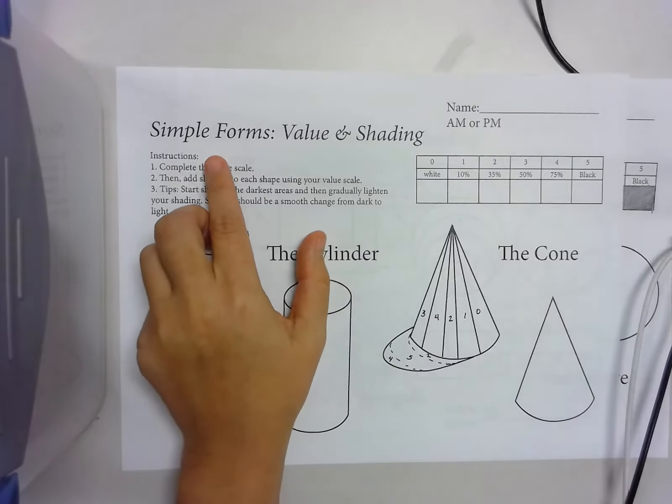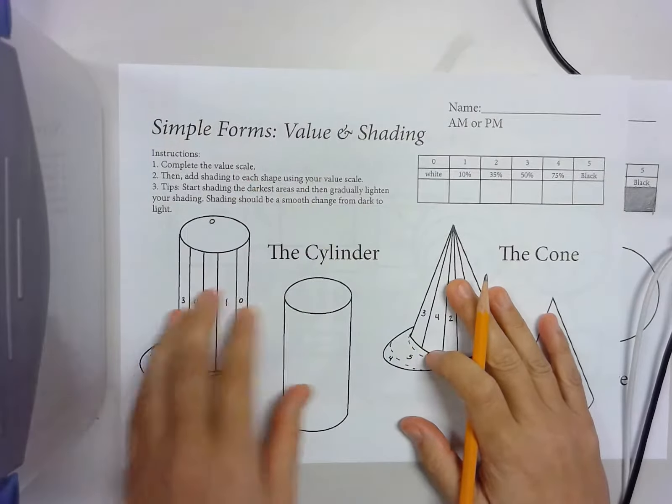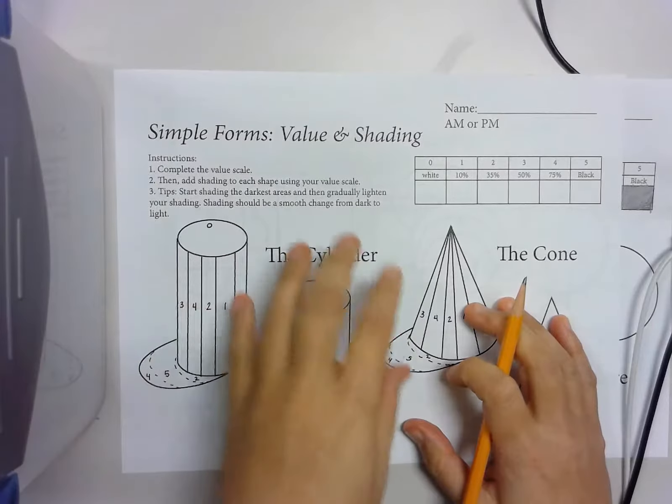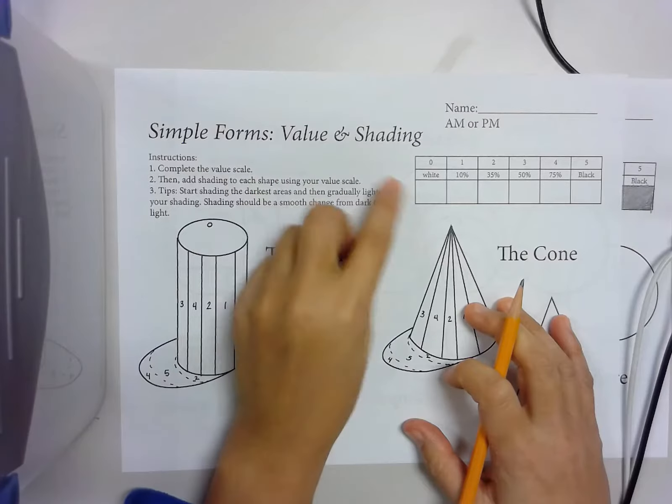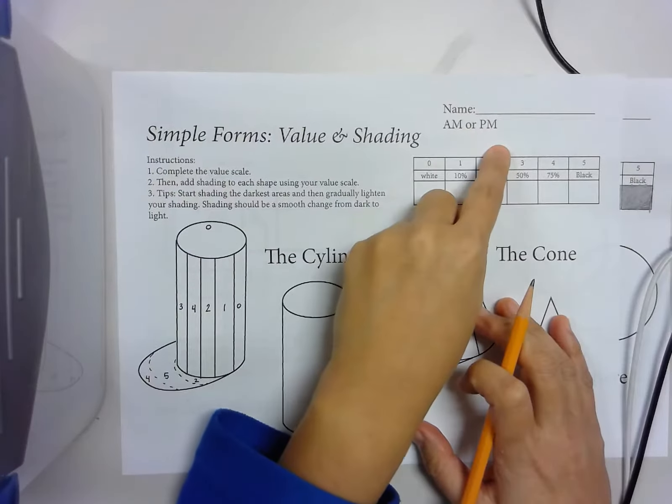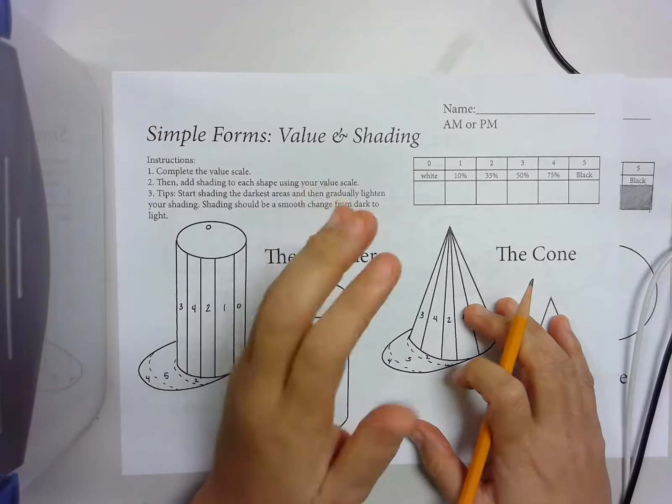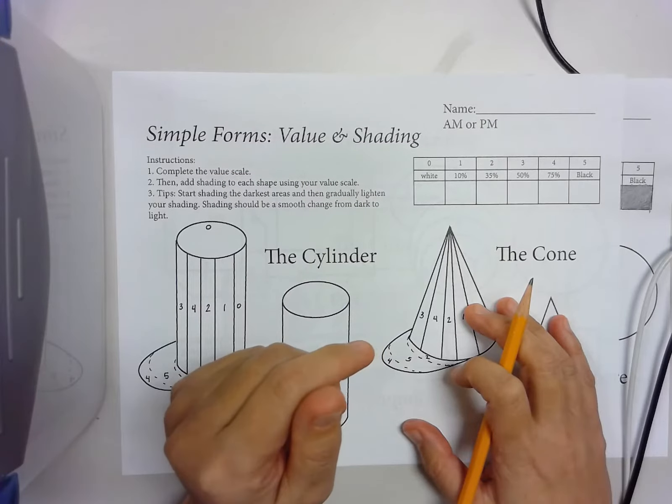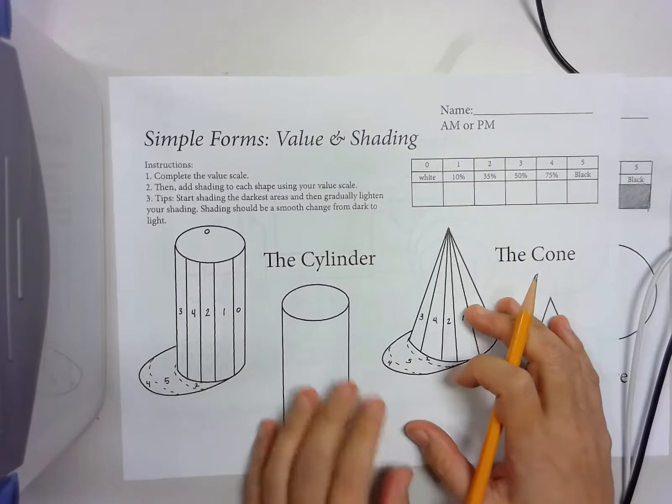This is simple forms, which are objects that are 3D or solid shapes, and you're doing value and shading. You need to put your name, AM or PM. When we talk about value and shading, we're talking about the lightness or darkness of a color. Sometimes people call it tonal value.